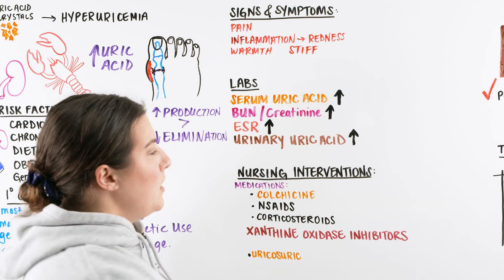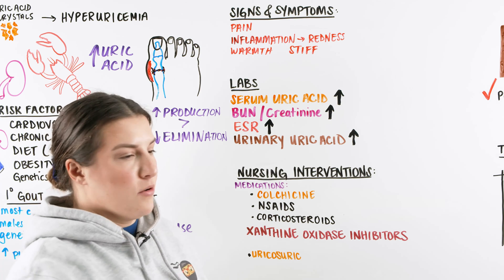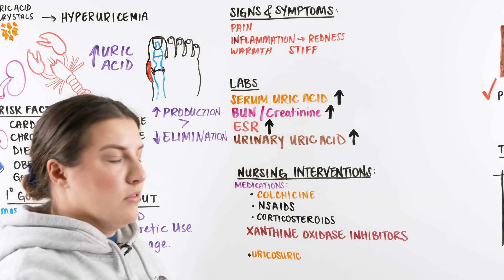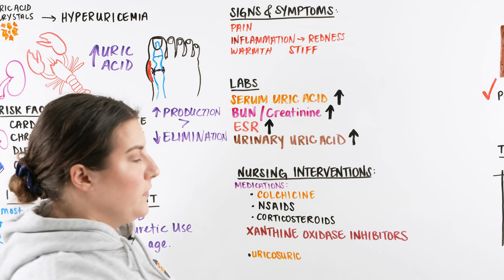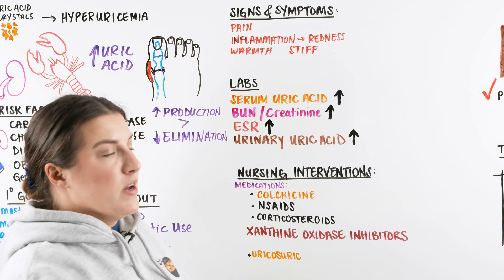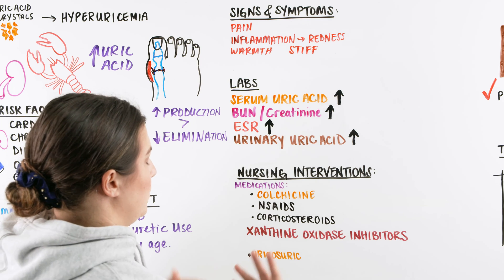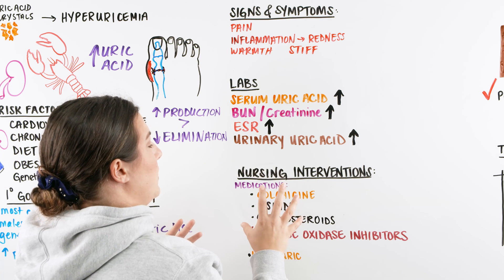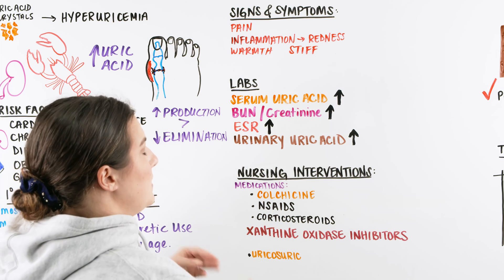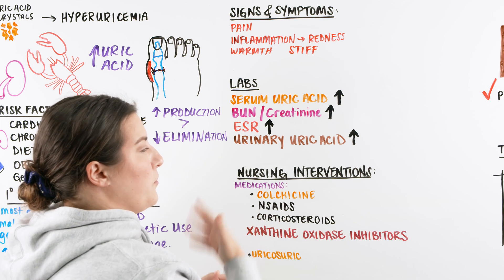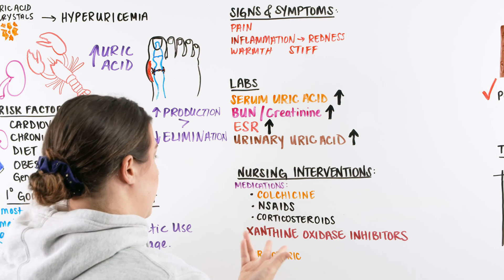Once we've confirmed the patient has gout, we move into nursing interventions. Besides talking to our patient about lifestyle modifiers — like reducing purine-rich foods such as shellfish, decreasing alcohol consumption, and increasing water intake to help flush out uric acid — we also want to discuss medical adherence to medication. This typically starts after two or three flare-ups, or when uric acid levels are really high.